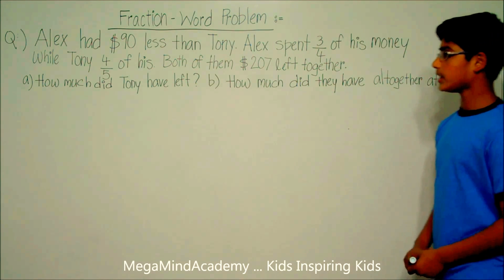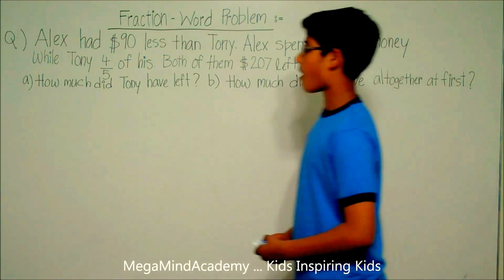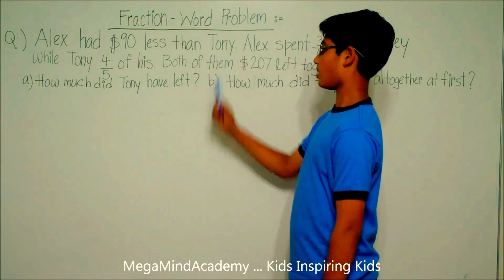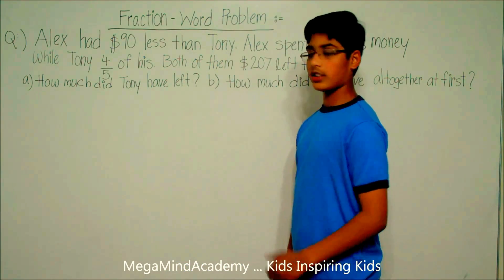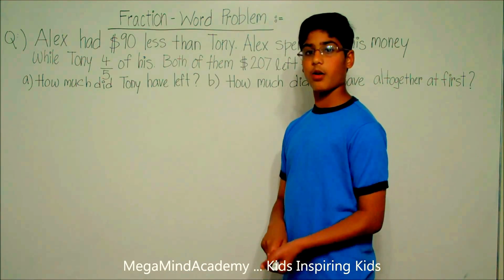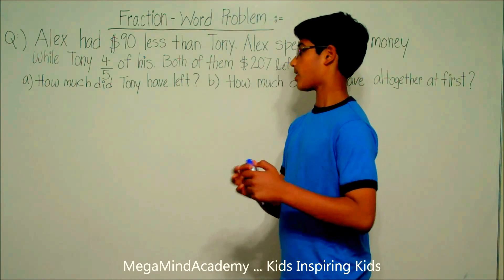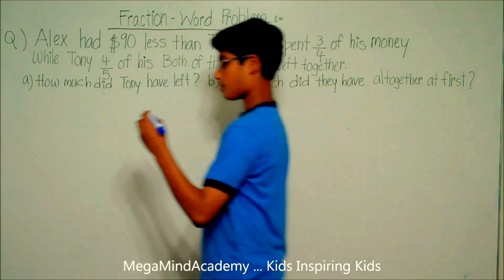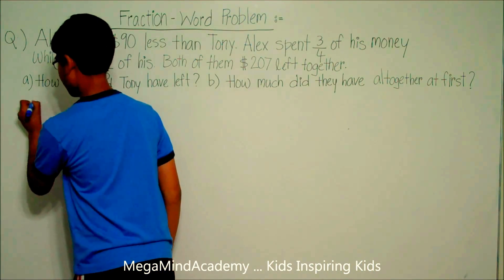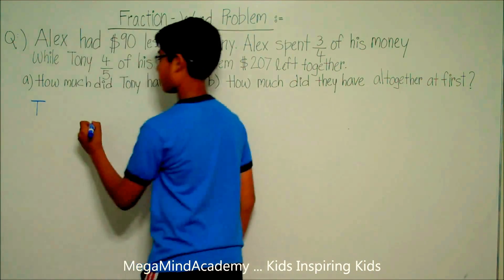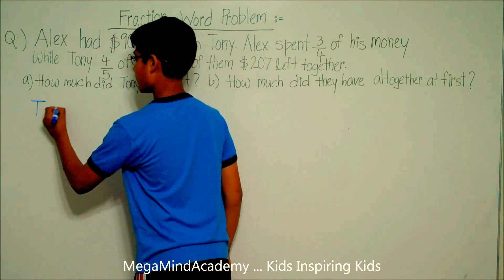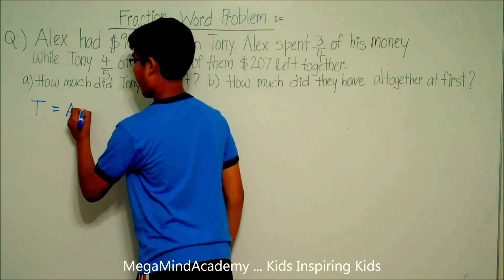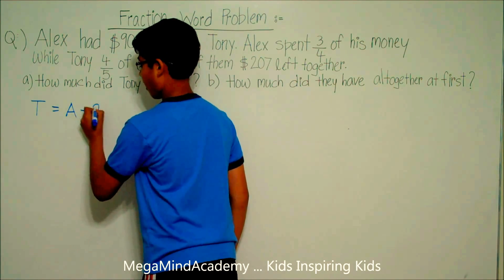As you can see in this problem, Alex had $90 less than Tony. So this means that Tony had $90 more than Alex. So Tony — T for Tony — is equal to Alex — A for Alex — plus $90.